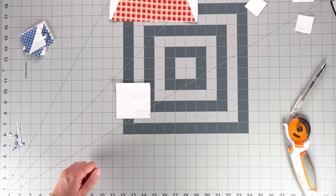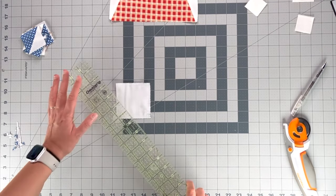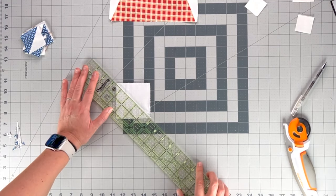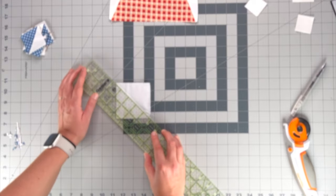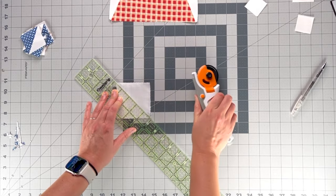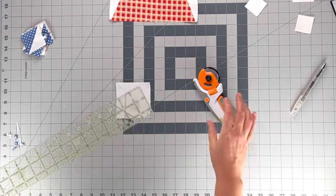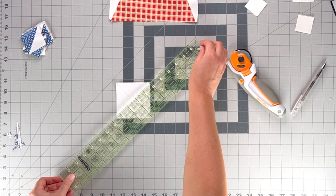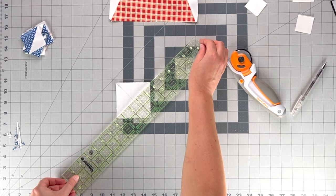And then we use our ruler to cut from corner to corner, and then we leave our fabric there and adjust our ruler across the square again.